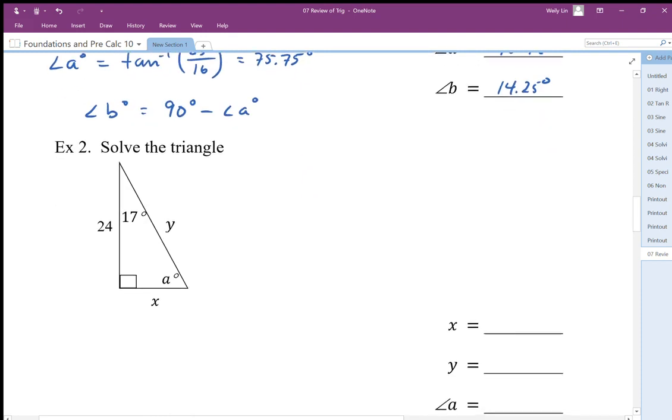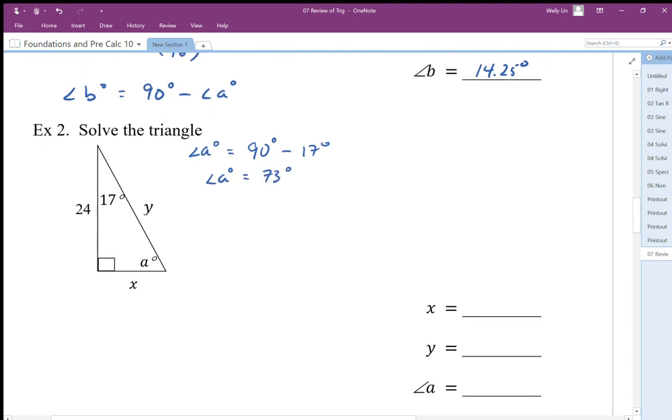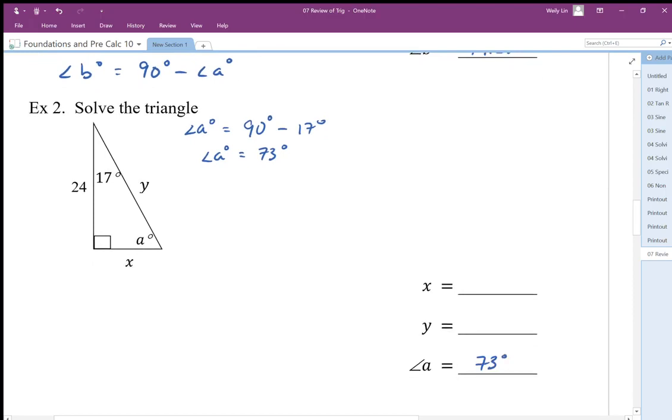This is the same type of problem. Here I've been given an angle and a side, and I have to figure out the other angle and two more sides. I'm going to start off with the angle because we know that these are complementary—these two angles are complementary, which means they add up to 90 degrees. So to find angle A, I take my 90 degrees and I subtract my 17 degrees. So I end up with 73 degrees for angle A. I didn't have to use my calculator or anything; I'm just adding up to 90.